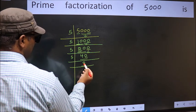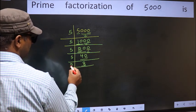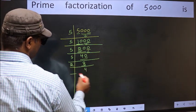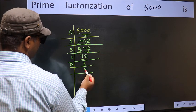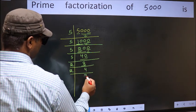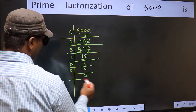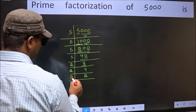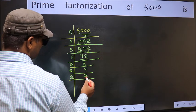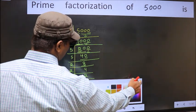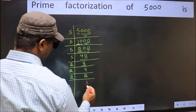Now here we have 8. 8 is 2 fours, so 2 times 4 is 8. Now we have 4. 4 is 2 twos, so 2 times 2 is 4. Now we have 2. 2 is a prime number, so 2 once is 2. So we got 1 here.